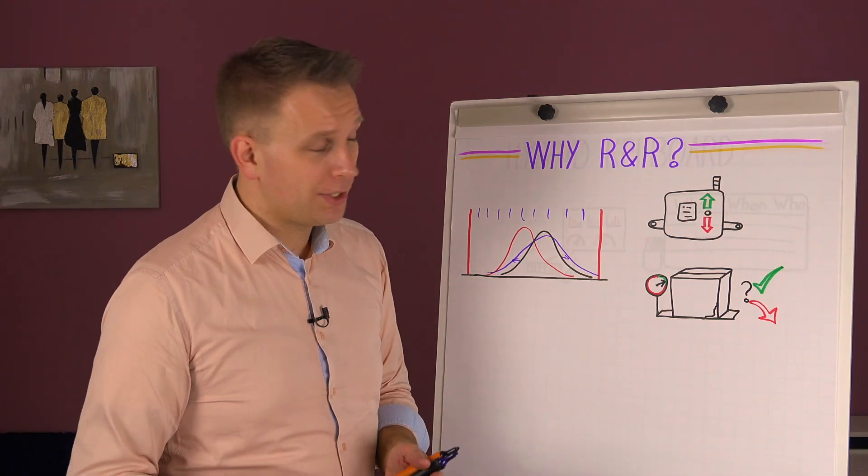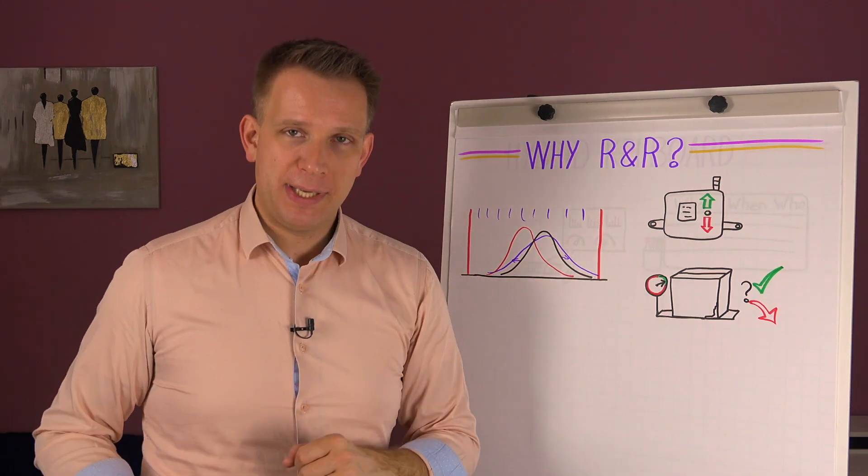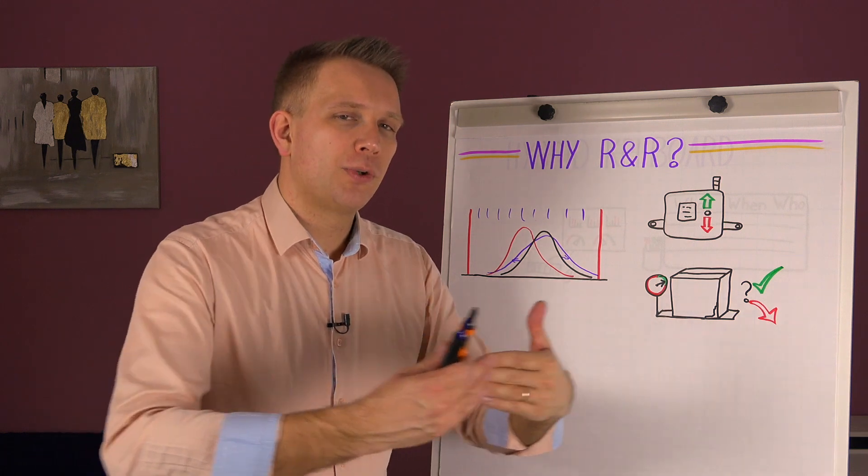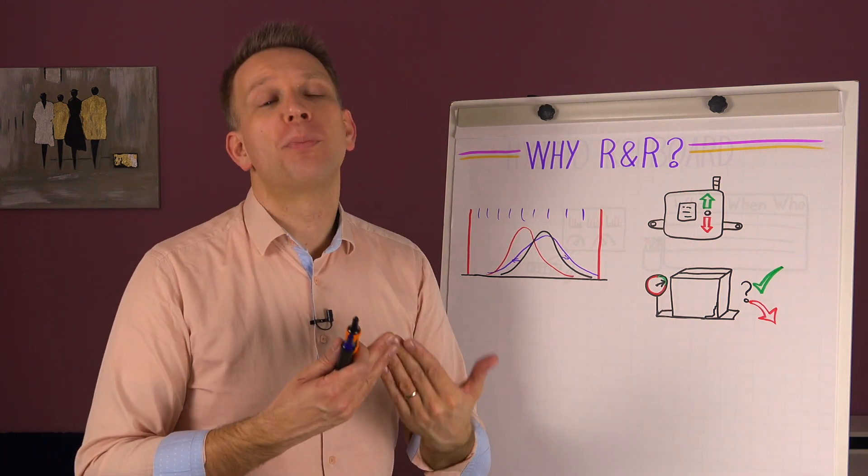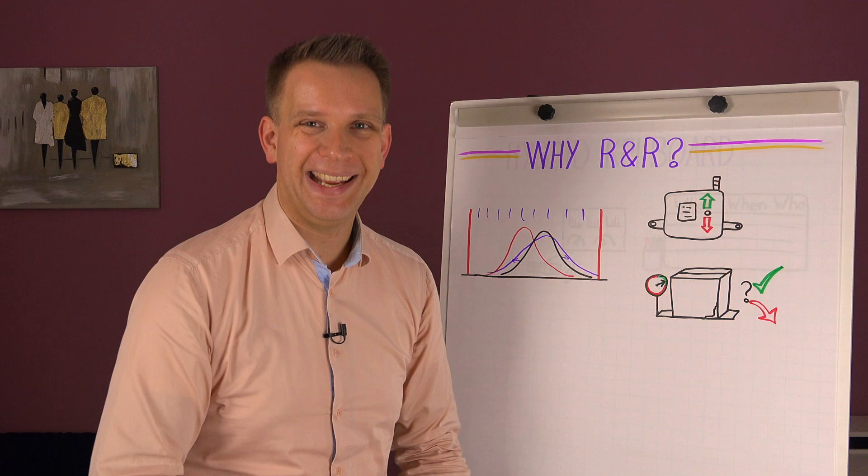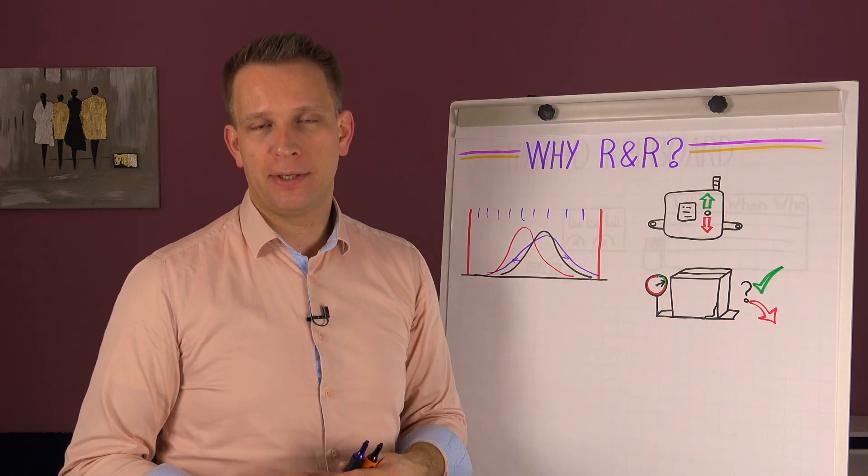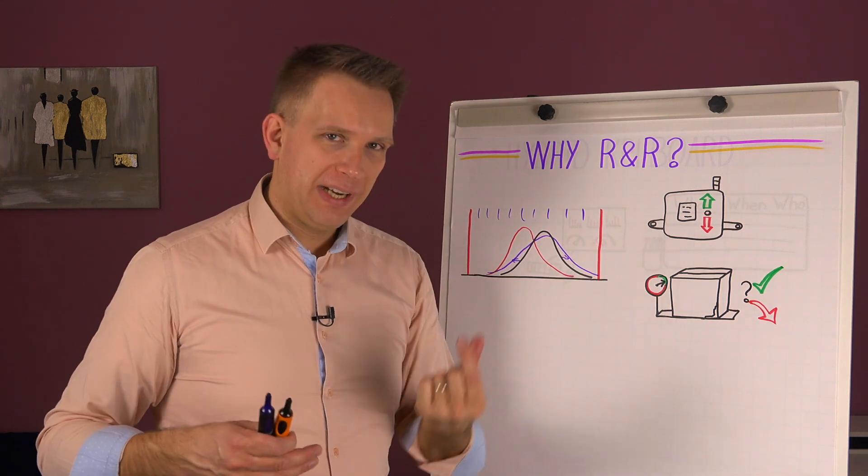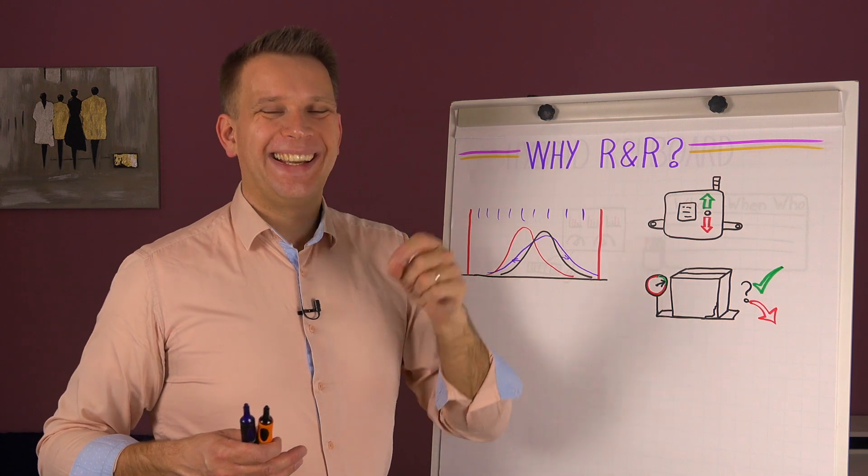Another way to think about this is when you have a very high CPK, you will also have a bit more bandwidth for your process to shift before you're going to hit one of the specification limits. So again, very accurate measurement is slightly less important.